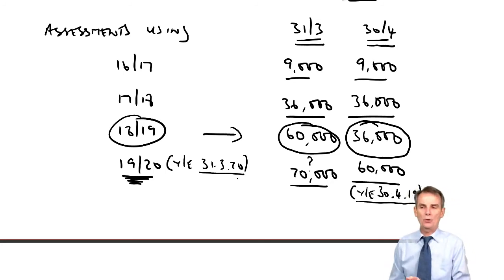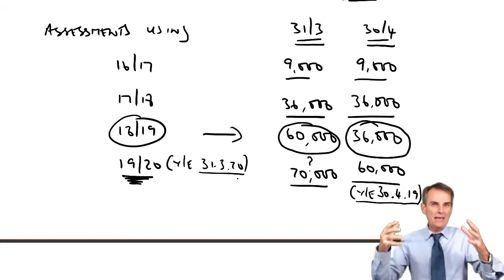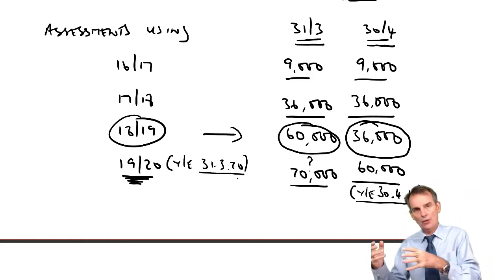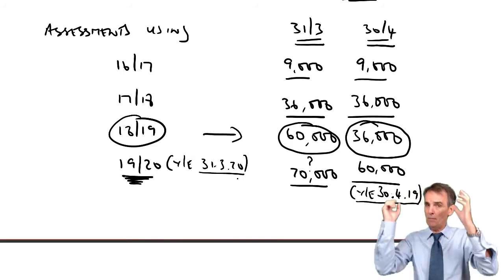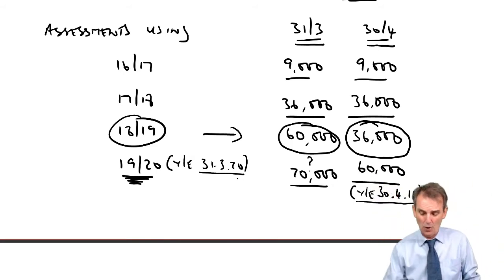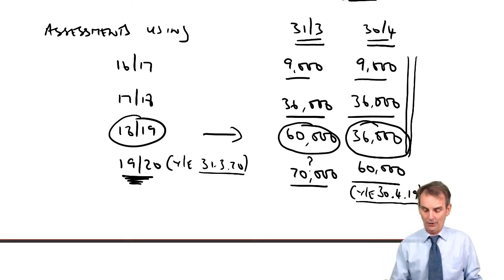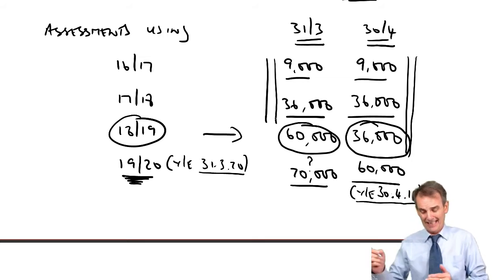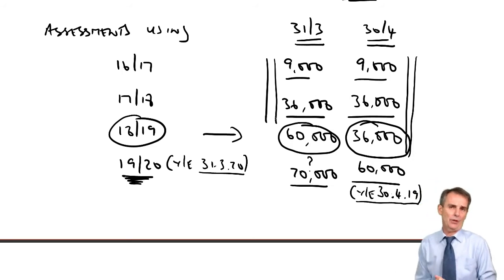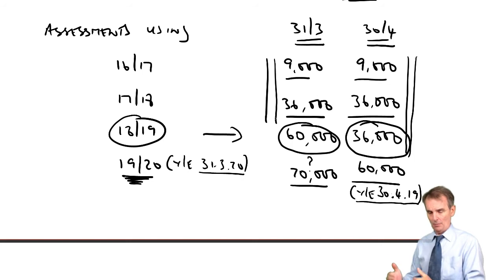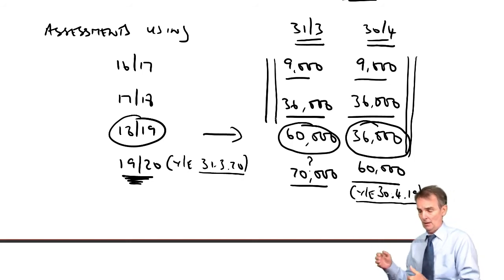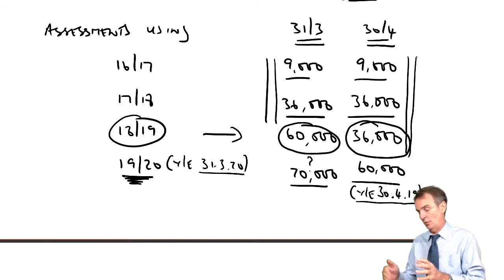What I could have done in this question was to give you a big opening period of profit where profits were being made at a higher rate per month than in the second or third period. If profits started big and then declined, the last thing you would want is for the first three tax years to all be based on that bigger profit. A simple rule of thumb: if profits are rising in opening years, choose 30th of April. If profits are declining from the opening period, use 31st of March.